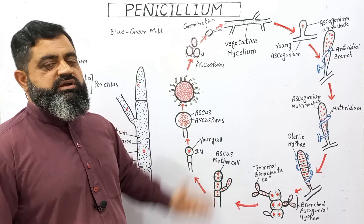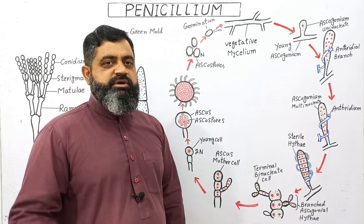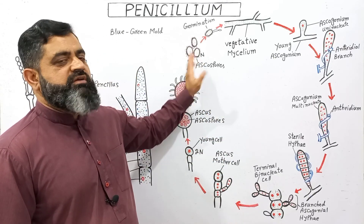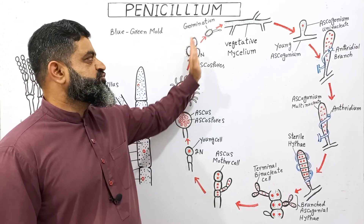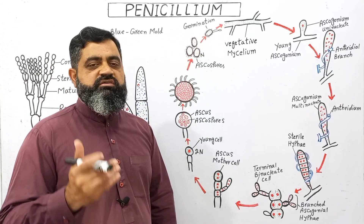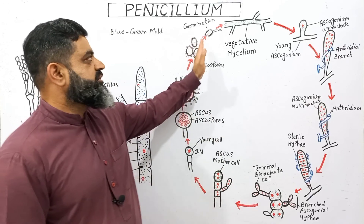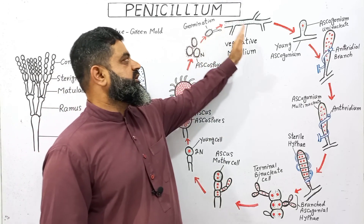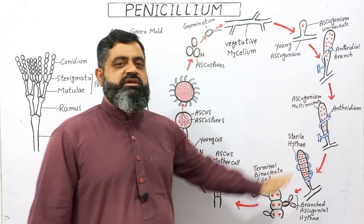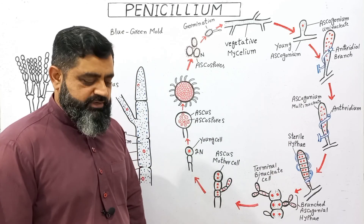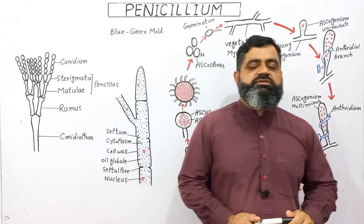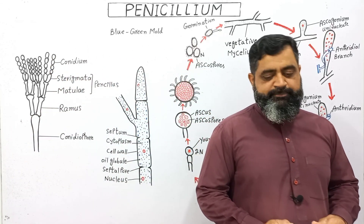The ascospores are dispersed by wind, water, or other agents. When they reach a suitable substratum under favorable conditions, they germinate into a new vegetative mycelium, and the life cycle is completed. I hope this makes sense, and I'll see you in the next lecture.